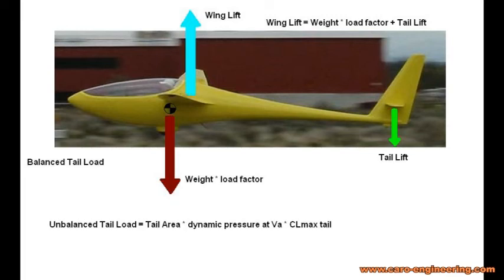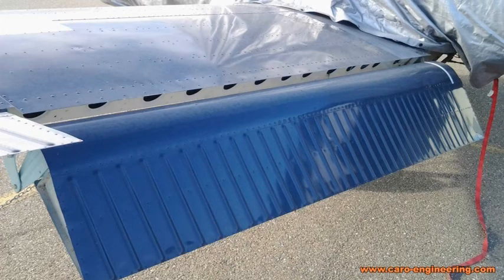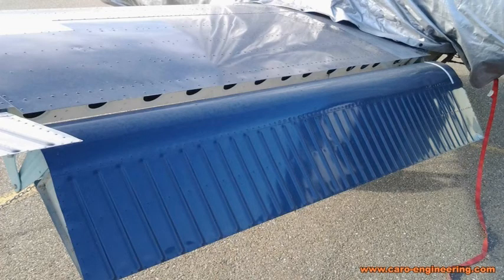The horizontal and vertical tail loads can be calculated in a similar way as the wing loads, from the aerodynamic forces those surfaces are capable of generating. The balanced horizontal tail loads are calculated from the airplane pitching moment requirements of the various load cases at the corner points of the speed-load factor diagrams. The unbalanced tail loads are simply the tail area times the dynamic pressure at VA times the maximum lift coefficient. For calculating the control surface loads, the FAR 23 regulations offer simplified methods if the airplane is of a conventional configuration and meets certain criteria. These are the Appendix A loads. The load distributions for flaps and control surfaces are assumed to be of rectangular or triangular shape, which results in potentially higher than reality loads, but makes the analysis very simple.